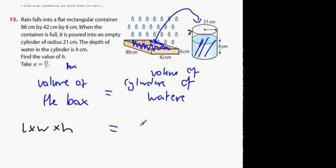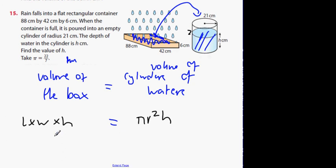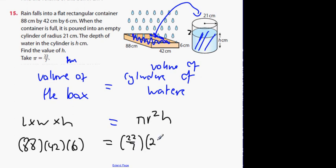What's the volume of a box formula? Length by width by height. Picking up more marks. Volume of a cylinder. Pi r squared h. Length by width by height. It's going to be 88 by 42 by 6. Pi is 22 over 7. Radius squared, anybody? 21 squared. And the height is? H.